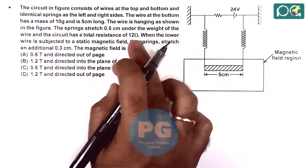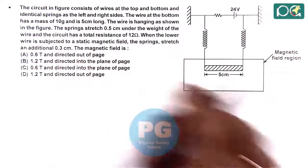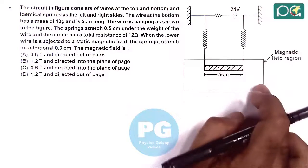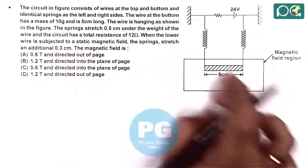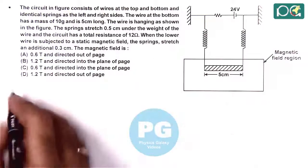The total resistance of the circuit is 12 ohms. When the lower wire is subjected to a static magnetic field in this region, the springs further stretch by an additional distance of 0.3 centimeters, and we are required to find the magnetic field in this region.